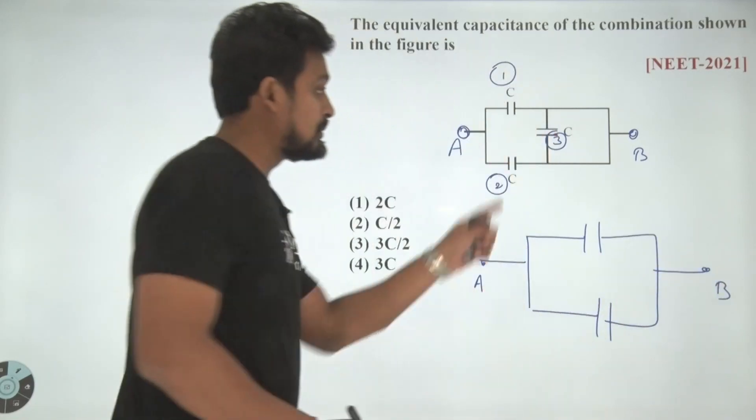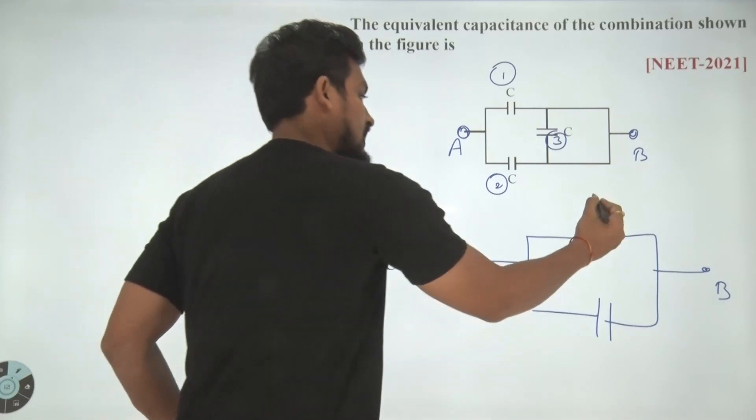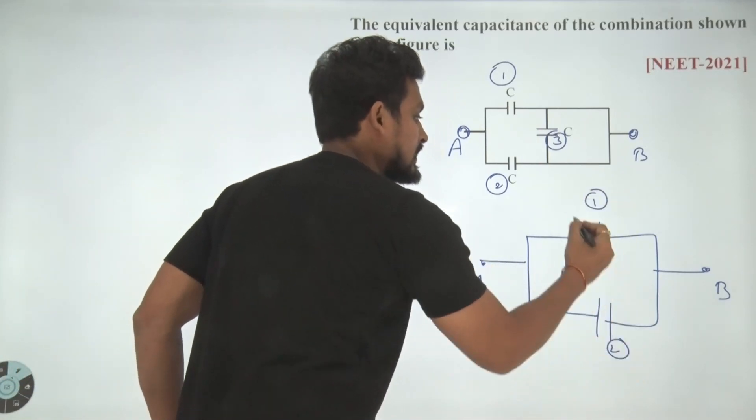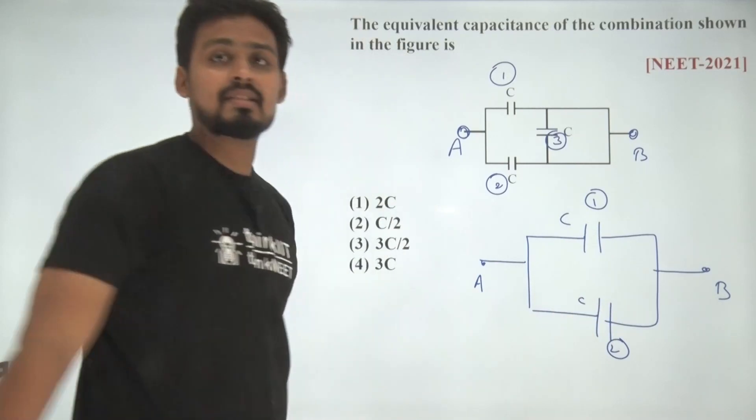Hence, can we draw the circuit like this? I have removed the third capacitor. So now I have only two capacitors, capacitor 1 and capacitor 2.